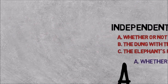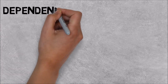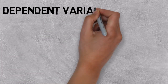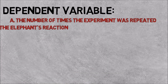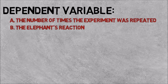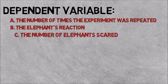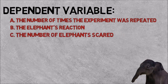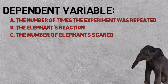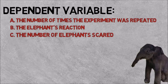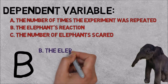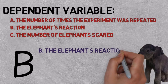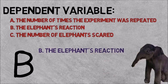What about this experiment's dependent variable? Was it the number of times the experiment was repeated, the elephant's reaction during the experiment, or the number of elephants scared by the mice? The correct answer is B because it is the reaction of the elephant that was being measured each time the experiment was carried out.